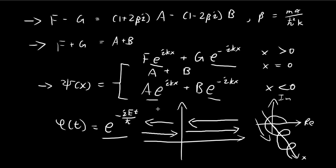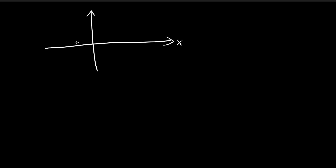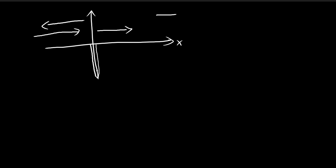Right now we have too many unknowns, so one way to simplify this setup is to consider a case where we have an x-axis and a potential that goes to negative infinity at a single point. We imagine a wave traveling from the left to the right. Once it reaches this point, two things can happen: either it bounces back, or it keeps going. In neither situation would we assume there is a wave coming from positive infinity traveling from right to left.